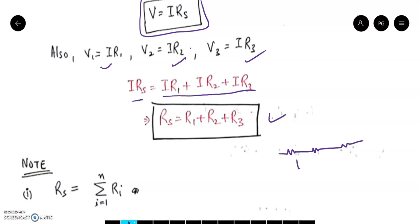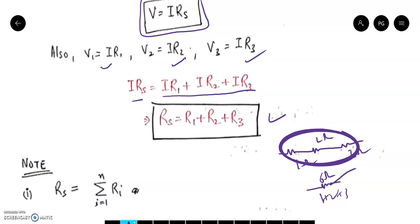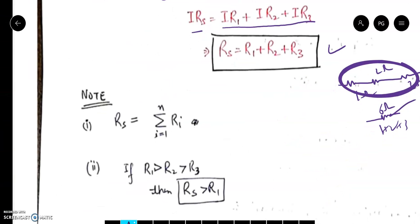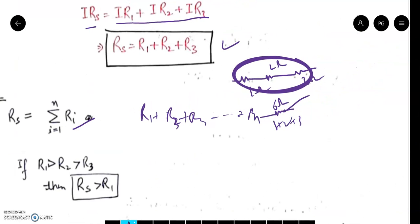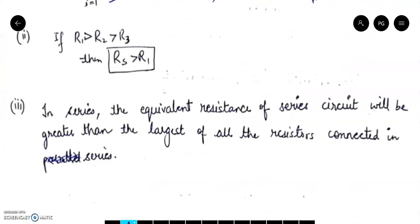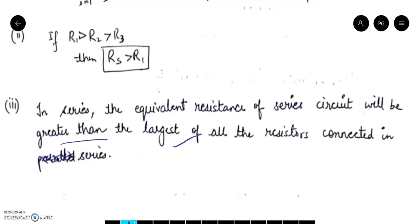For example, we have three resistances: 1 ohm, 2 ohm, and 3 ohm. Rs = 1 + 2 + 3 = 6 ohm. So we can replace these three resistances with a single 6 ohm series equivalent resistance. If there are n resistances, the formula is R1 + R2 + R3 + ... + Rn. Notice the equivalent resistance of 6 ohm is greater than all three individual resistances. So in a series combination, the equivalent resistance is always greater than the largest of all the resistors connected in series.